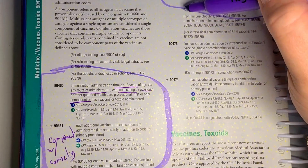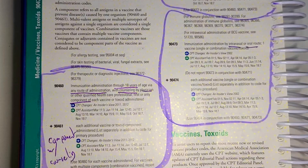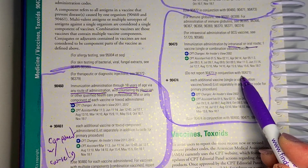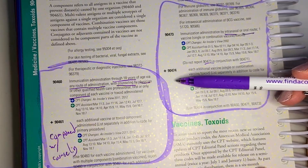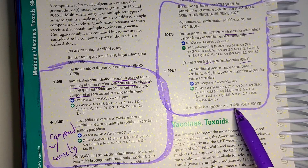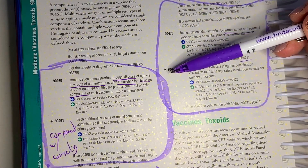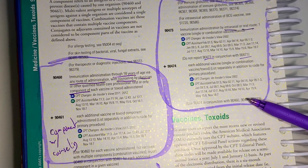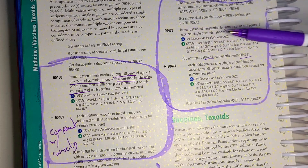After that we have 90473 and 90474 for intranasal or oral vaccines. Pay close attention here: you cannot report 90473 in conjunction with 90471. So if you're doing an oral vaccine, you can only add on 90474, which does not have that restriction — it can be used in conjunction with the component codes or the per-vaccine codes. Just be aware: 90473 cannot be used with 90471, but 90474 can be used as an add-on with 90460, 90471, or even 90473 when giving multiple oral or intranasal vaccines.